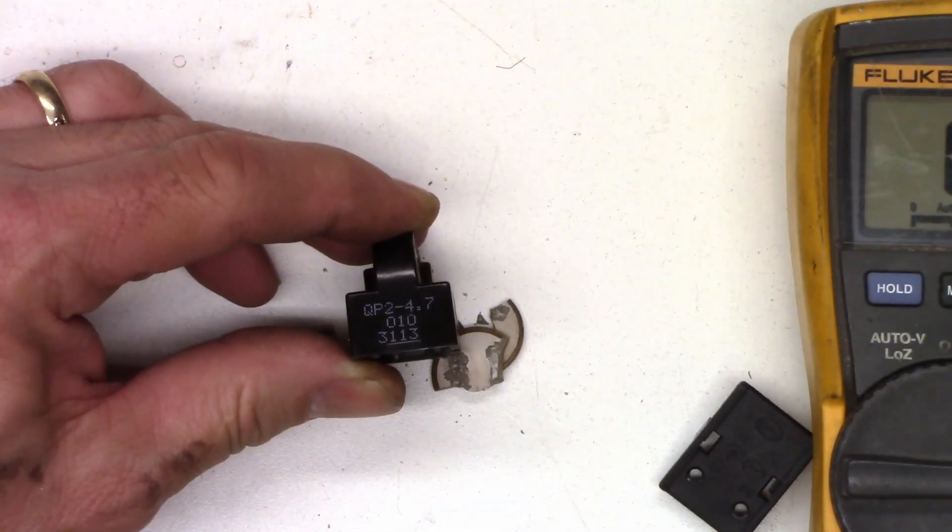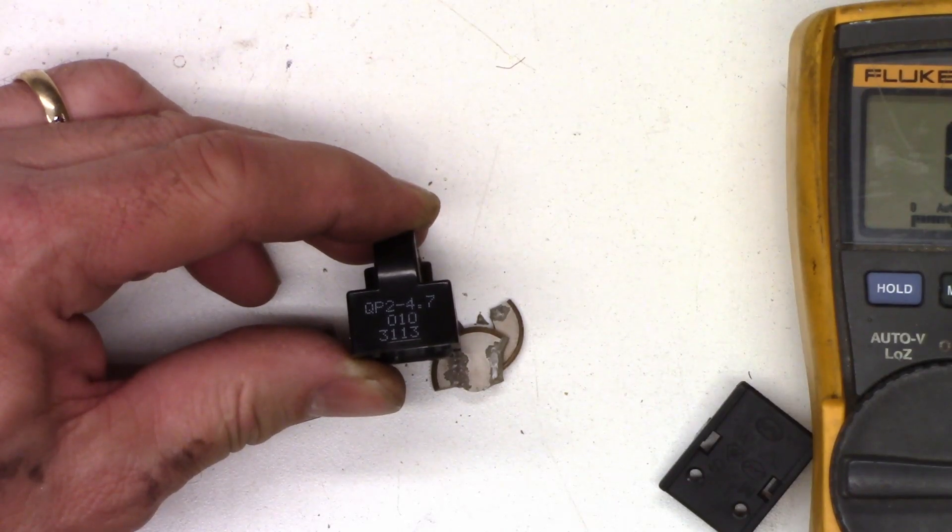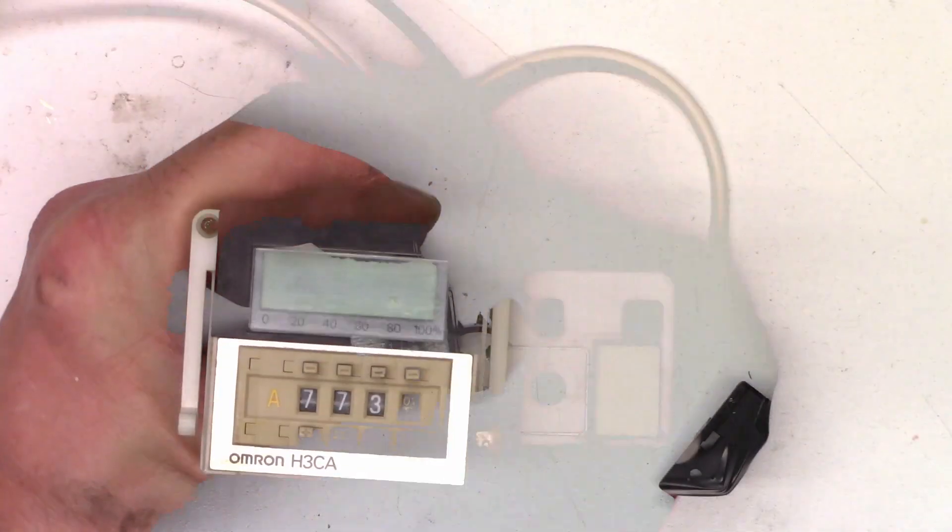So here's the part number that's on it, QP2-4.7, which tells me it should be a 4.7 ohm thermistor.